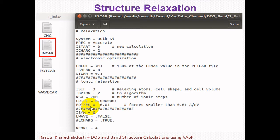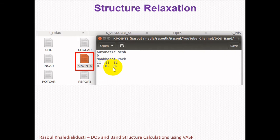Using a negative EDIFFG is usually a more convenient setting. ISYM determines how VASP treats symmetry. ISYM = 0 means VASP does not use symmetry, which is more time consuming. If the structure has symmetry we can turn it on with ISYM = 1. Since our silicon structure has symmetry I use ISYM = 1. There are also tags to control writing the WAVECAR and CHGCAR files. Since in structural relaxation we don't need the charge density file, I turn that tag off.